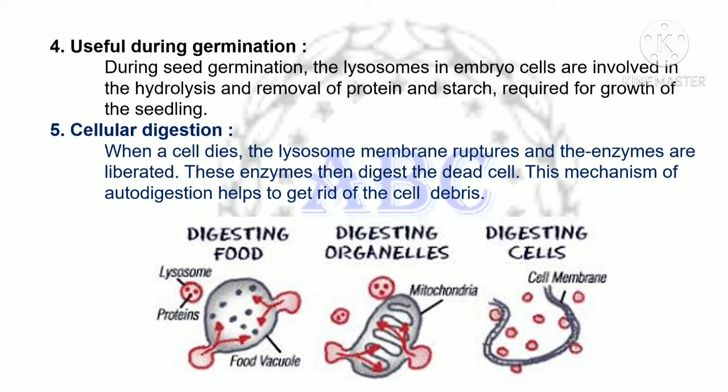In the figures shown, the first figure shows digestion of food material by lysosomes, the second figure shows digestion of a whole organelle such as a mitochondrion, and the third diagram shows digestion of a whole cell by the lysosome.